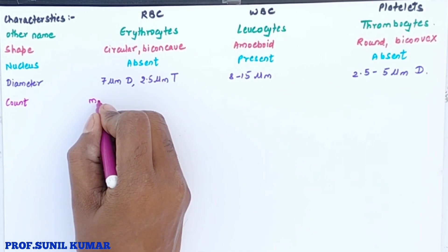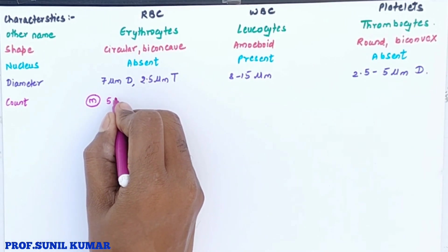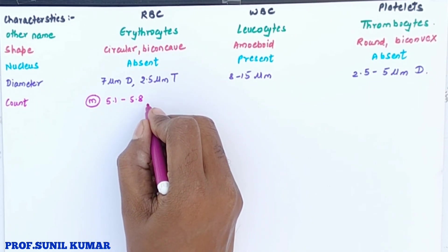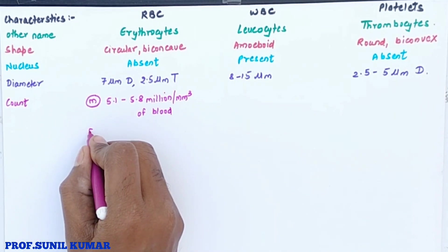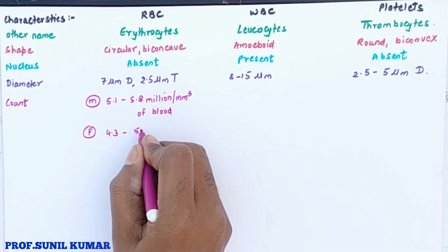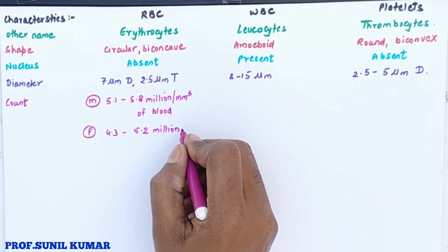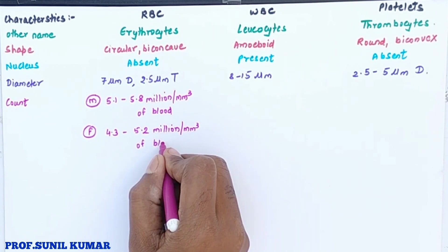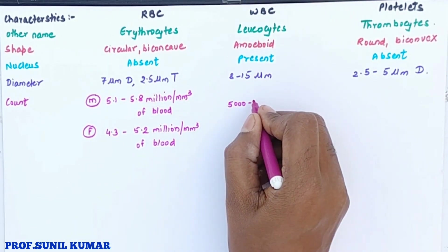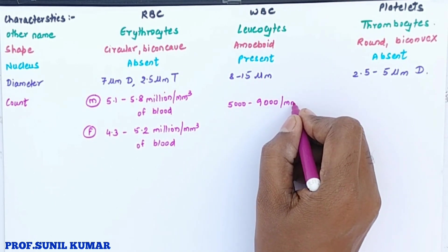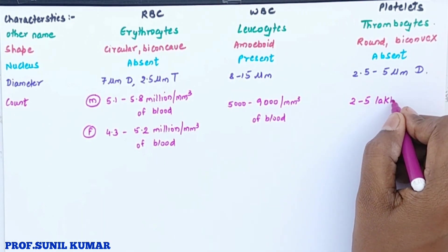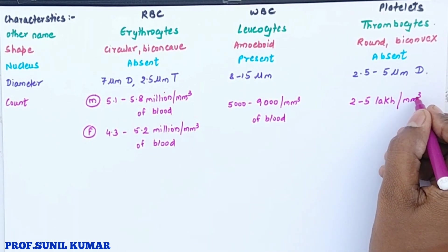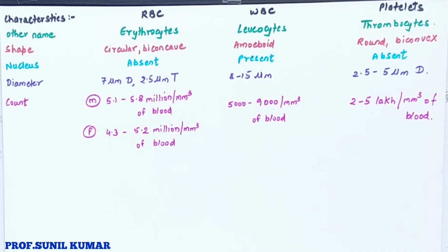The RBC count in males is 5.1 to 5.8 million per cubic millimeter of blood, whereas in females it is 4.3 to 5.2 million per cubic millimeter. Males have more RBC than females. WBC count is 5,000 to 9,000 per cubic millimeter, common for both male and female. Platelets number two to five lakhs per cubic millimeter of blood.